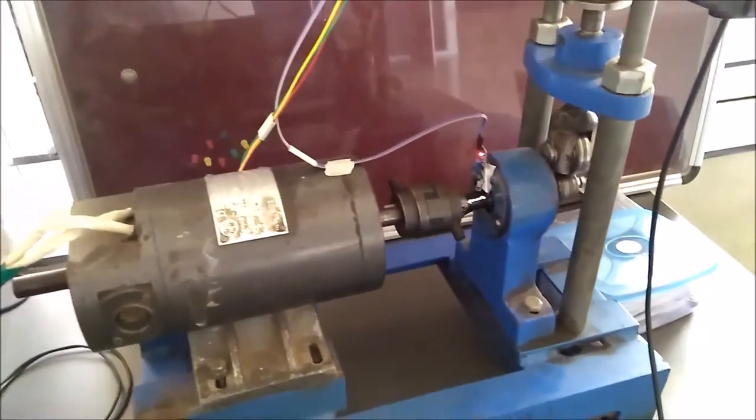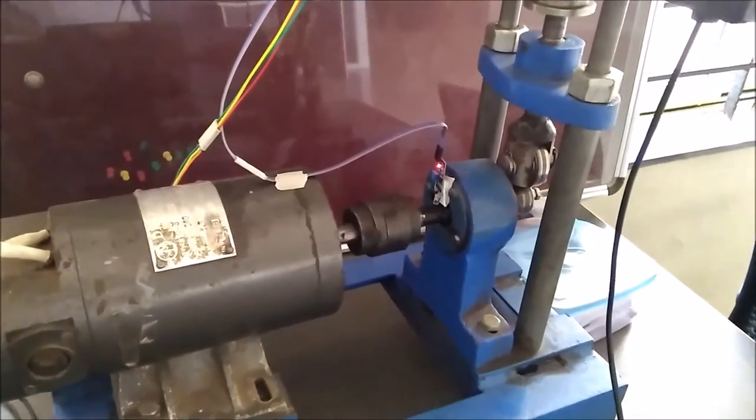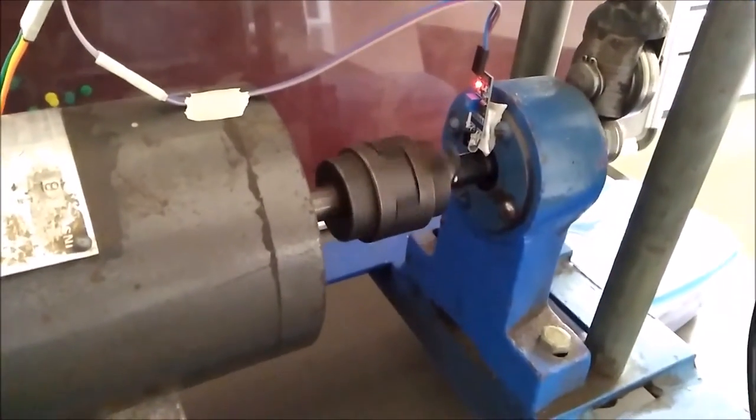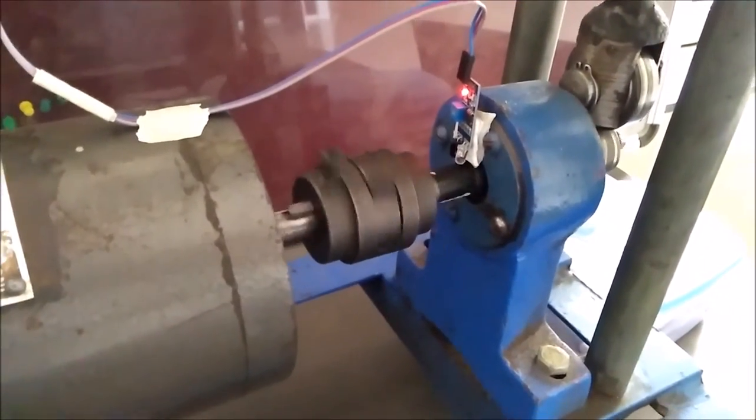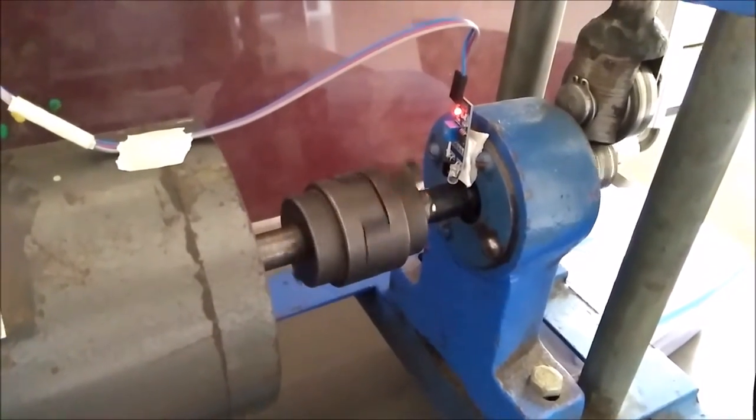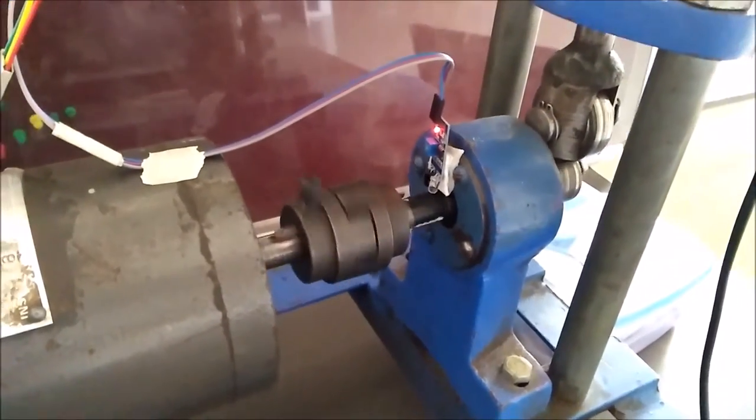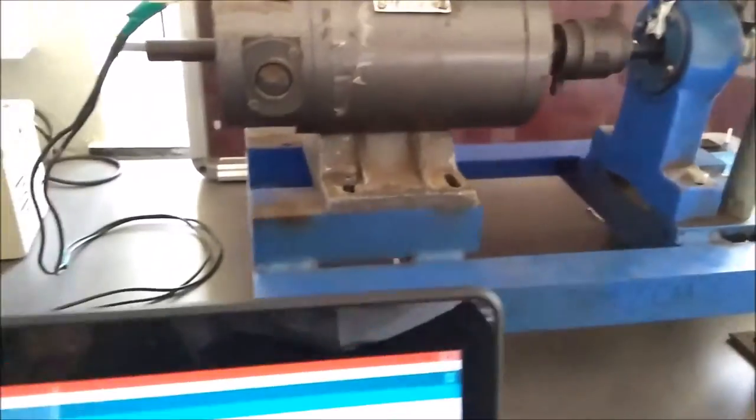Now we will start the motor. It is rotating now, and every time that mark goes in front of the IR sensor, it will detect the RPM. That RPM can be seen on the screen.